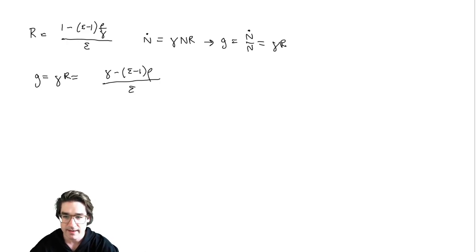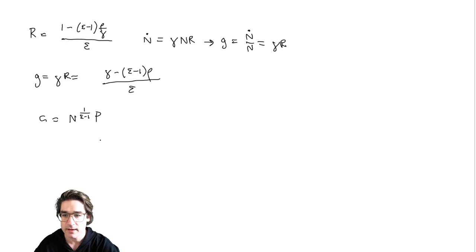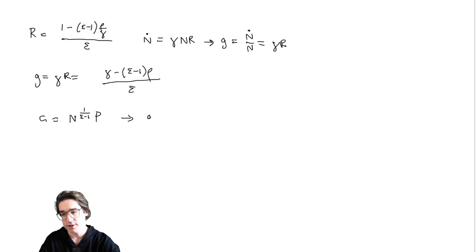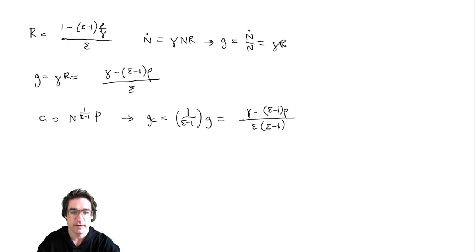Anytime we want to map back up through the chain from our fundamental objects, especially in terms of growth rates, if we know the expression for C as output — which is N to the one over epsilon minus one times P — that's our expression for total output in simplified form. It's saying you've got some production labor going in linearly, augmented by technology, specifically N to the one over epsilon minus one. In our equilibrium, the labor allocation isn't changing. So GC is equal to one over epsilon minus one times G — that's the power rule of growth rates. So that's your growth rate of consumption.